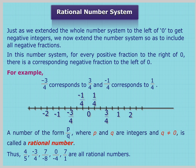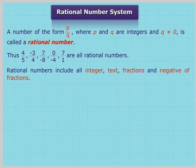Thus, 4/5, -3/4, 7/-8, 0/-4, and 7/1 are all rational numbers. Rational numbers include all integers, decimals, fractions, and negatives of fractions.